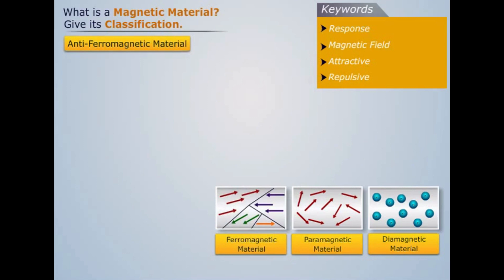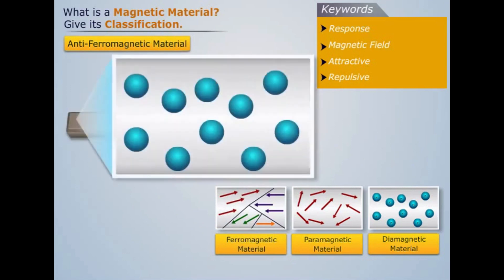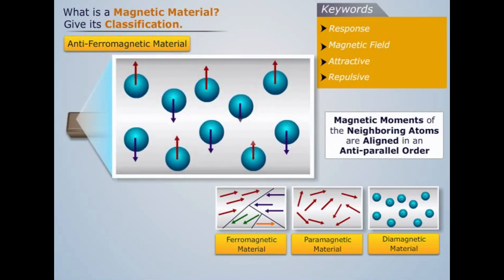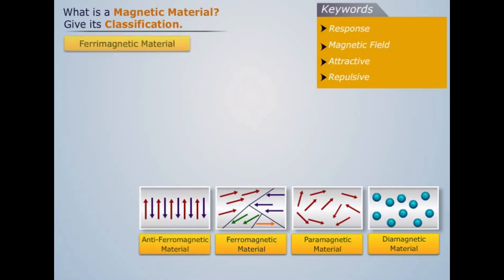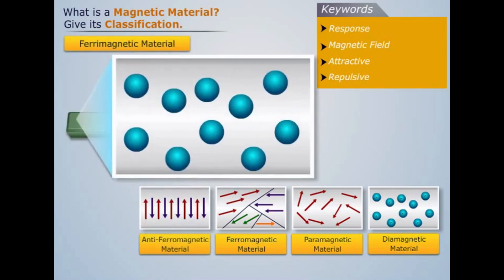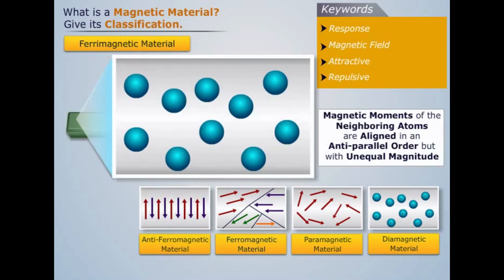Antiferromagnetic materials are those materials in which the magnetic moments of neighbouring atoms are aligned in an anti-parallel order. And Ferrimagnetic materials are those materials in which the magnetic moments of neighbouring atoms are aligned in an anti-parallel order but with unequal magnitude.